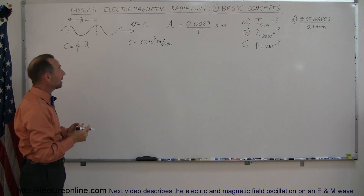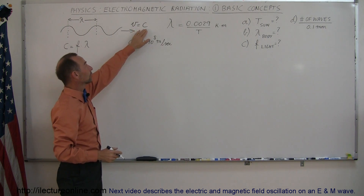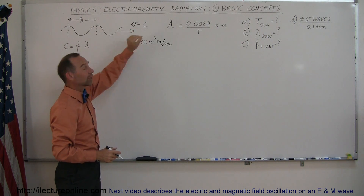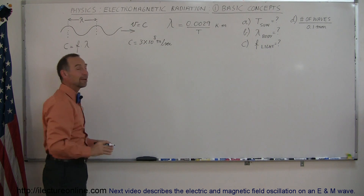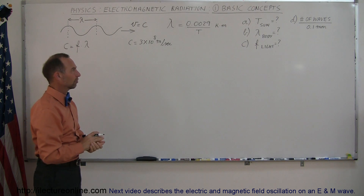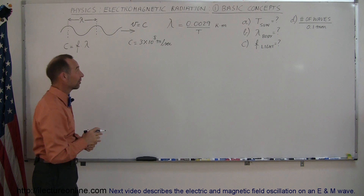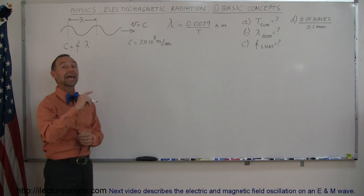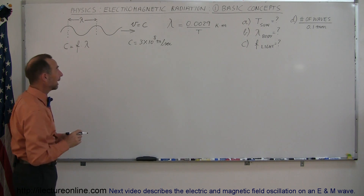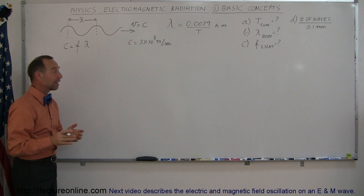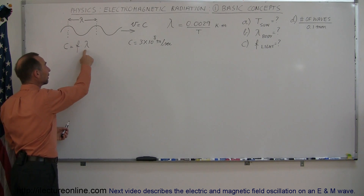A wave has velocity, and in this case the velocity of the wave is equal to the speed of light, which is 3 times 10 to the 8 meters per second — that's like 186,000 miles in one second, or seven and a half times around the world in one second. Just like all waves, there is a relationship between the speed, the frequency, and the wavelength.